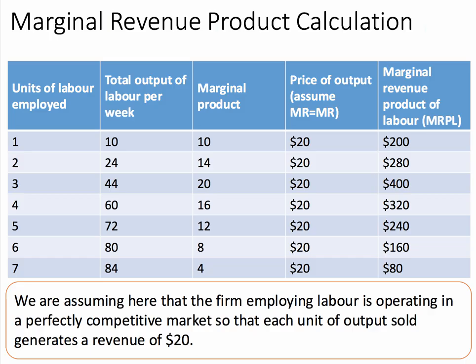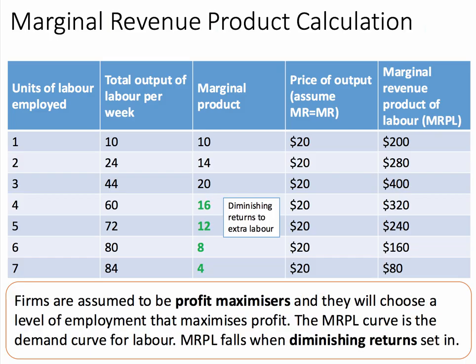With one unit of labour employed, a marginal product of 10 multiplied by $20 gives $200. Once diminishing returns set in, the marginal revenue product of labour falls. The fourth worker adds only 16 to total output, the fifth worker 12, the sixth worker 8, and the seventh worker adds only 4 units of output. So the marginal revenue product of labour curve in a competitive labour market is the demand curve for labour, and MRPL will fall when diminishing returns to extra labour set in.